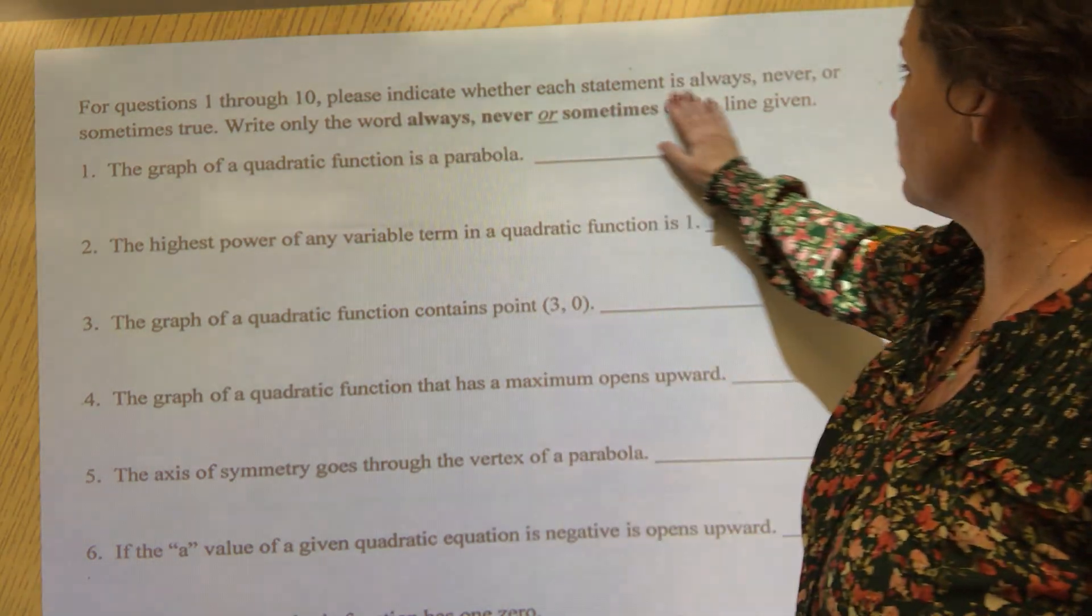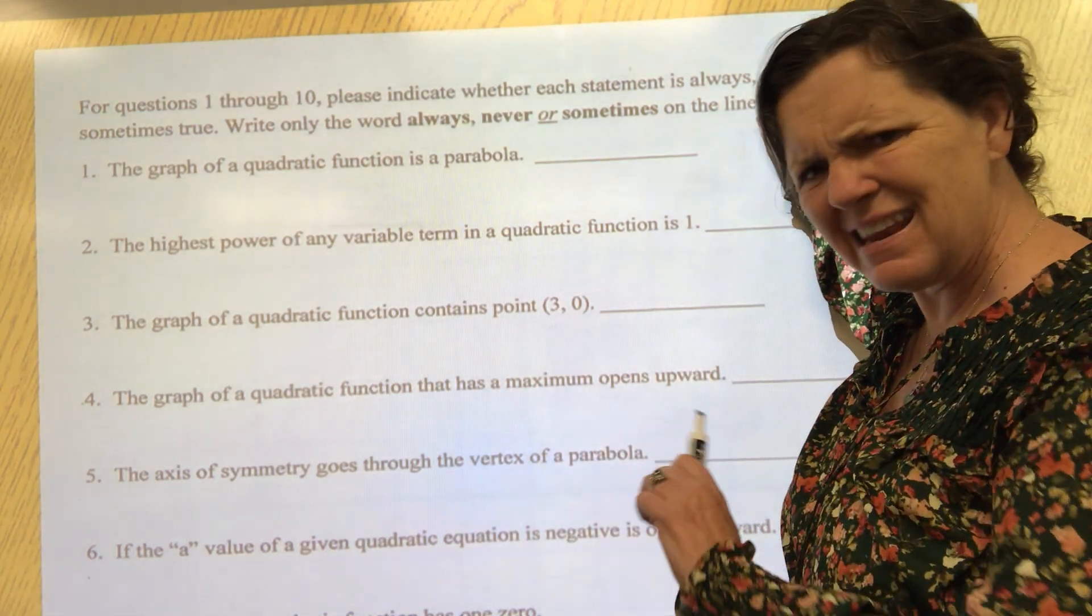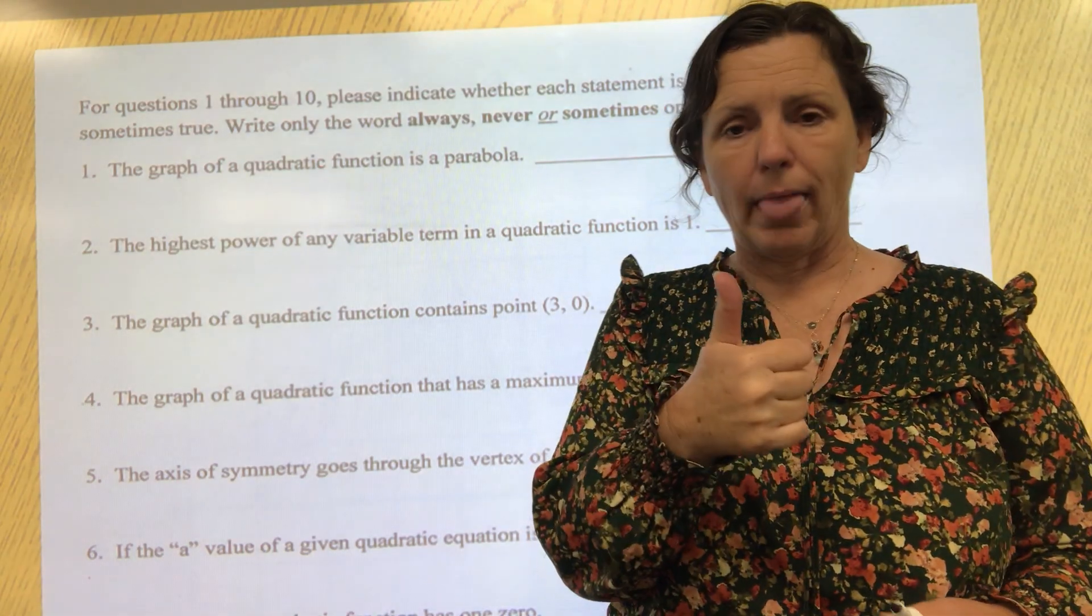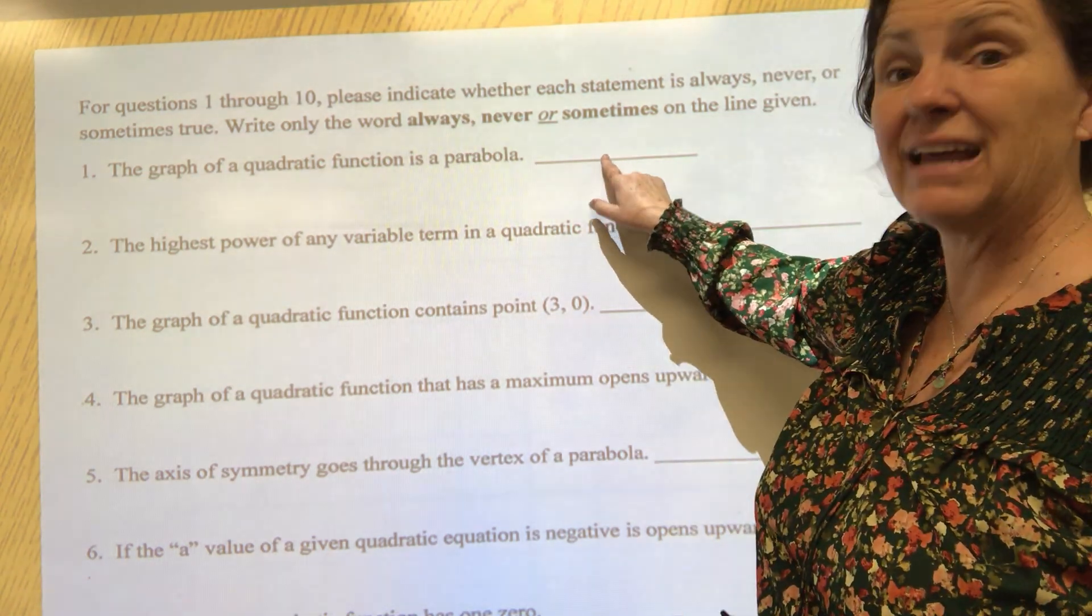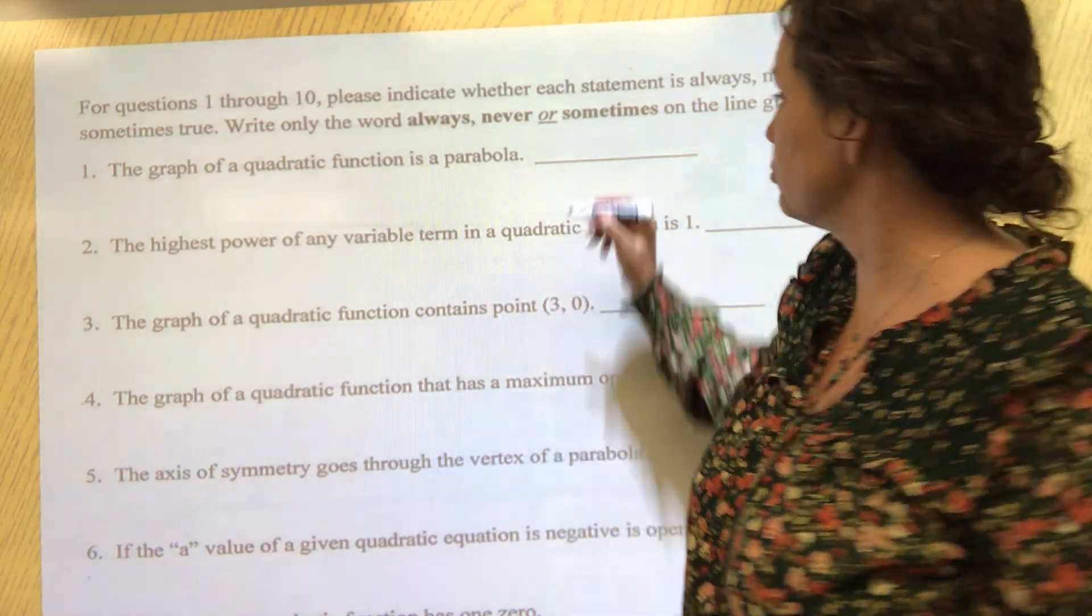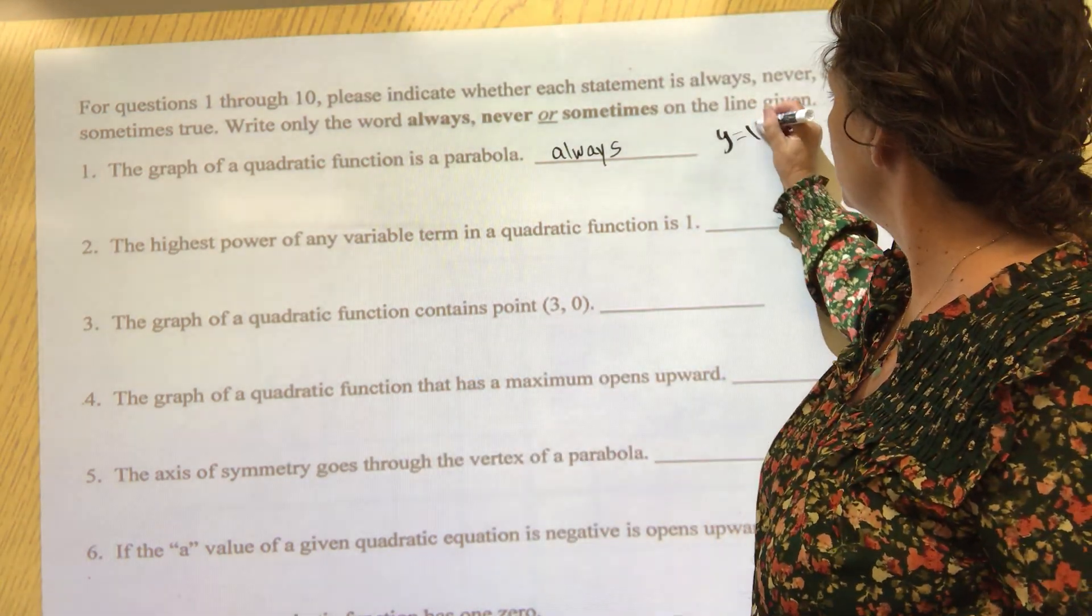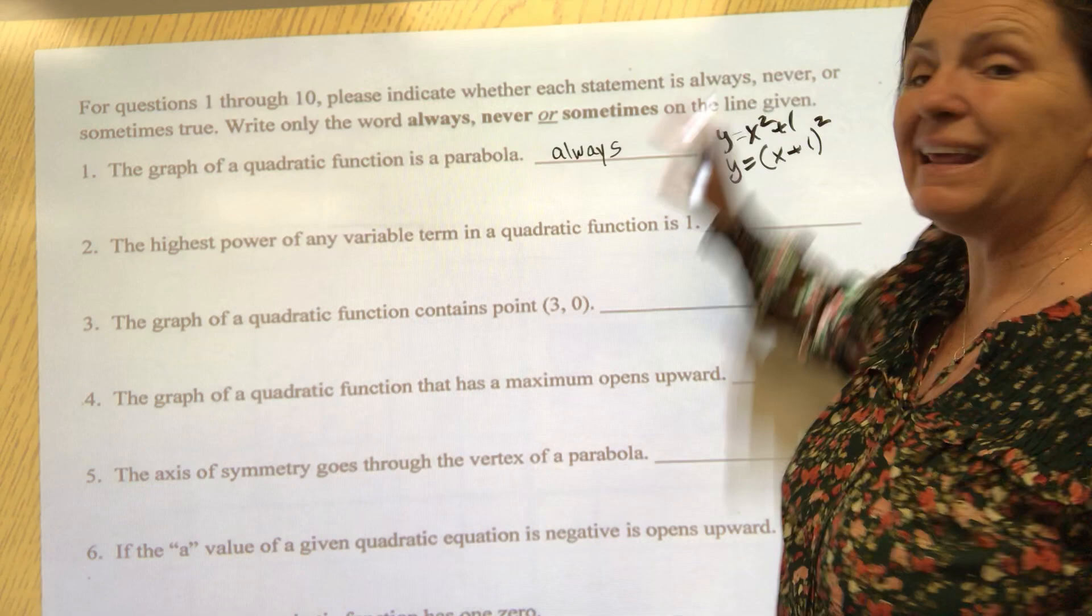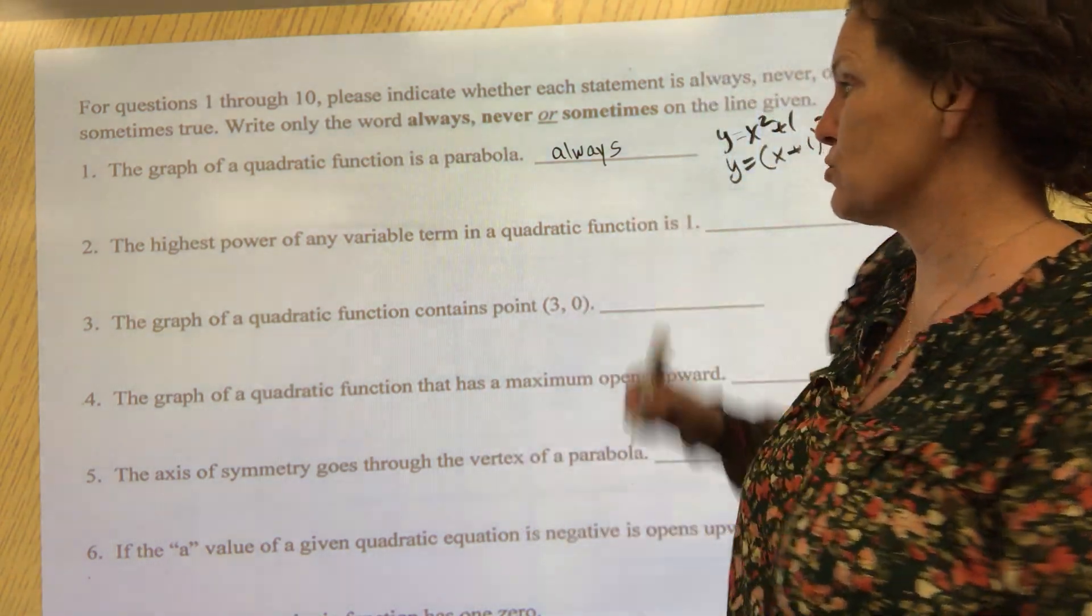For questions one through ten, please indicate whether each statement is always true 100% of the time, never true, or could it sometimes be true. What you're going to write on the line is either the word always, never, or sometimes. Let's read the first one: the graph of a quadratic function is a parabola. That is always true. Quadratics are what we're studying - any of these beautiful things that have an x that happens to be squared. Anything with an x squared is a quadratic. When you graph a quadratic it is a parabola 100% of the time. That is always true.